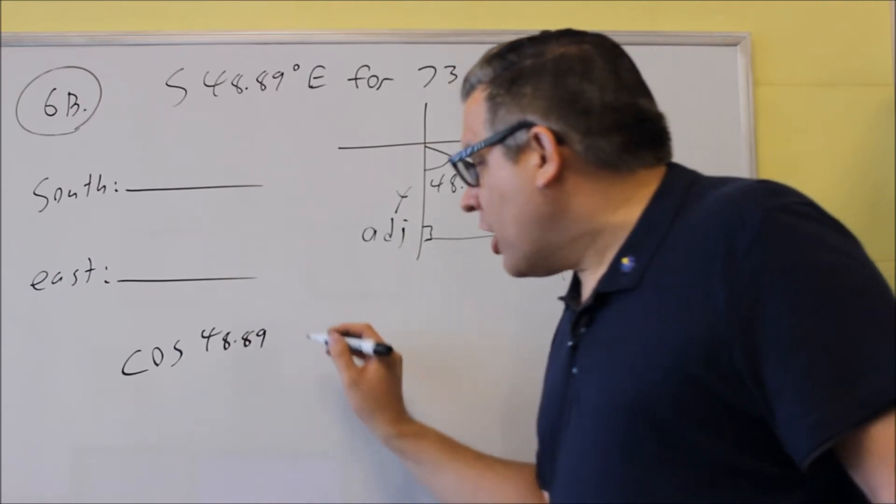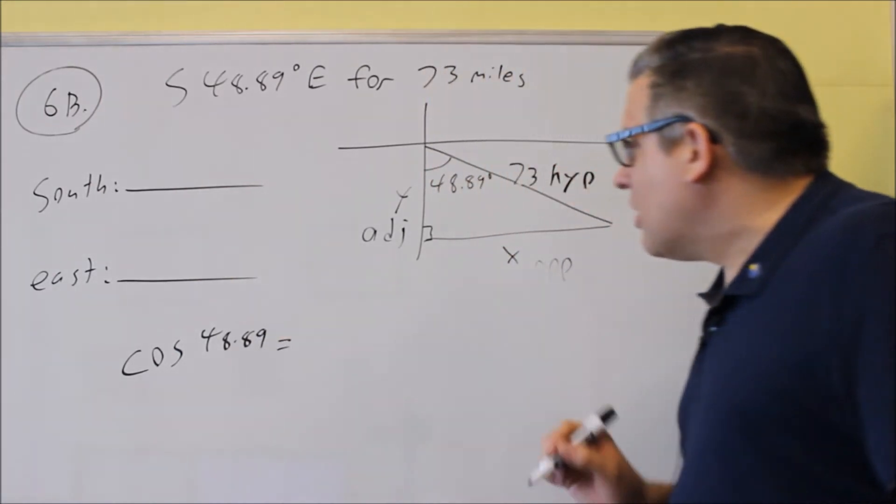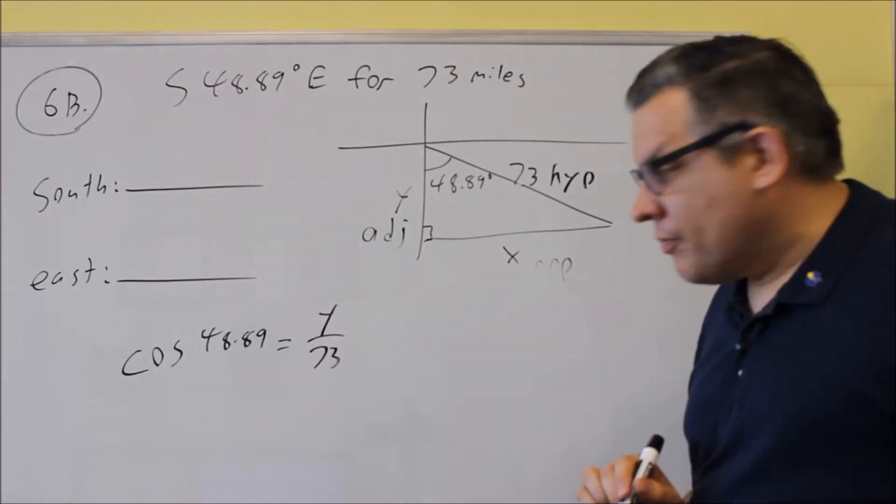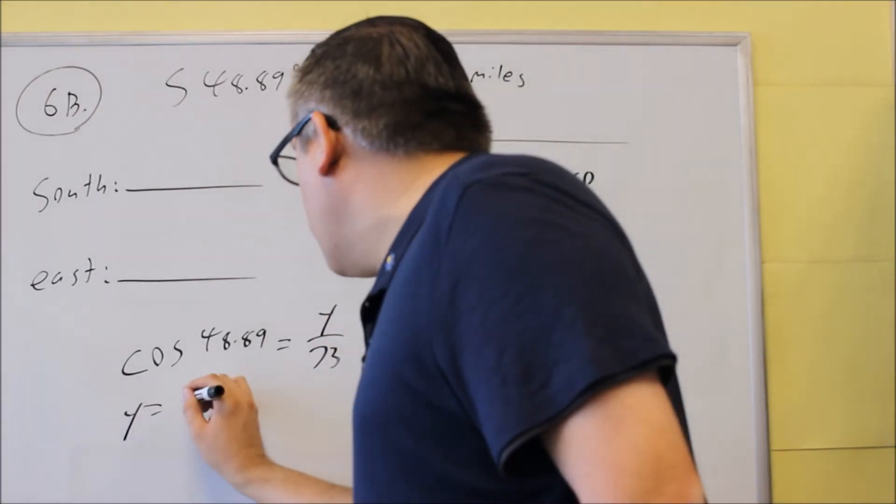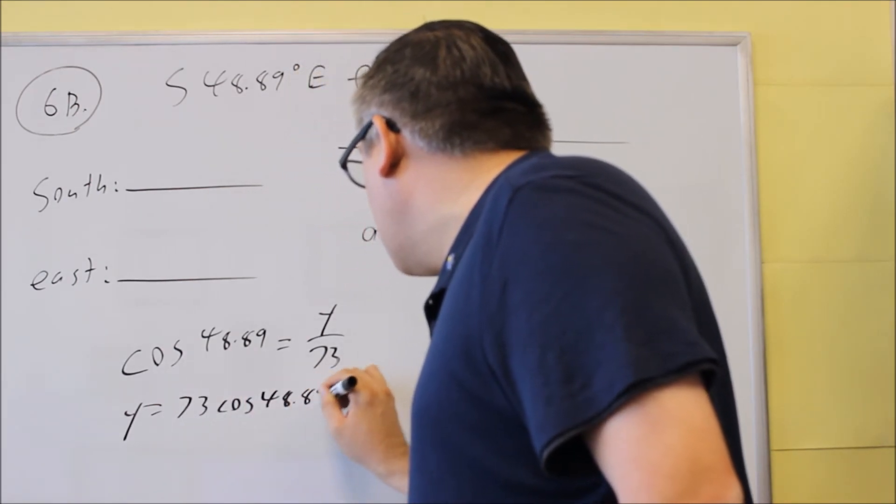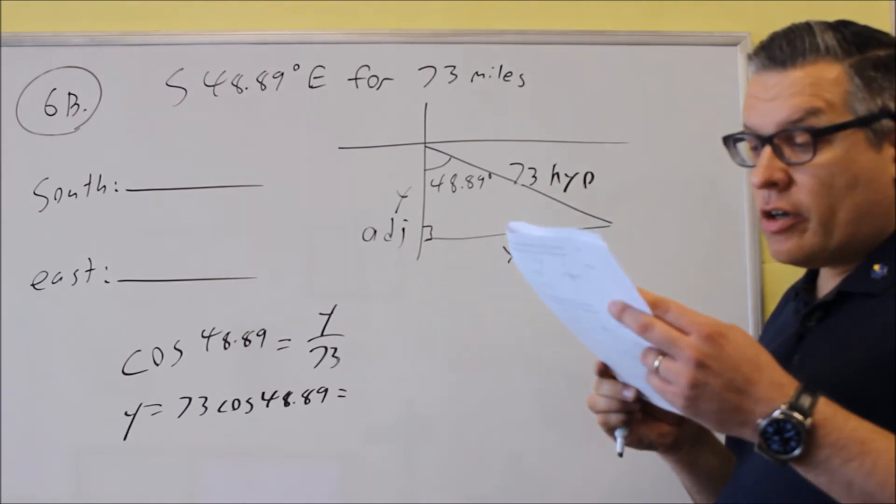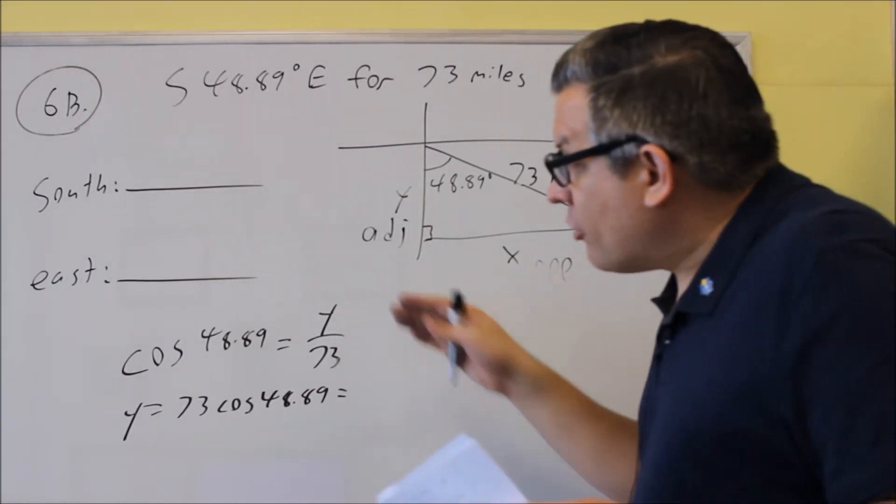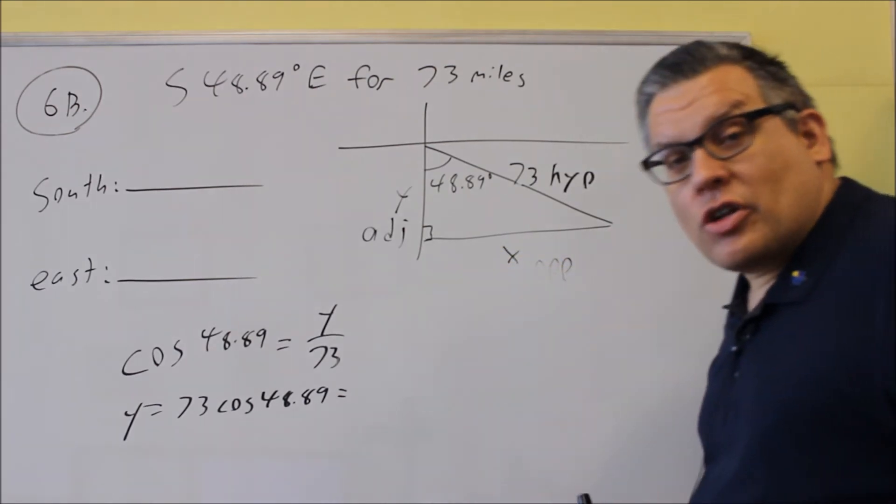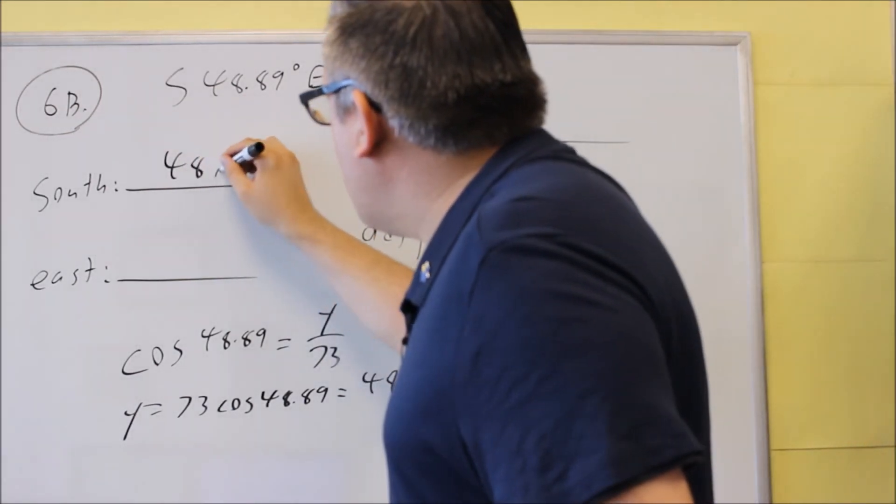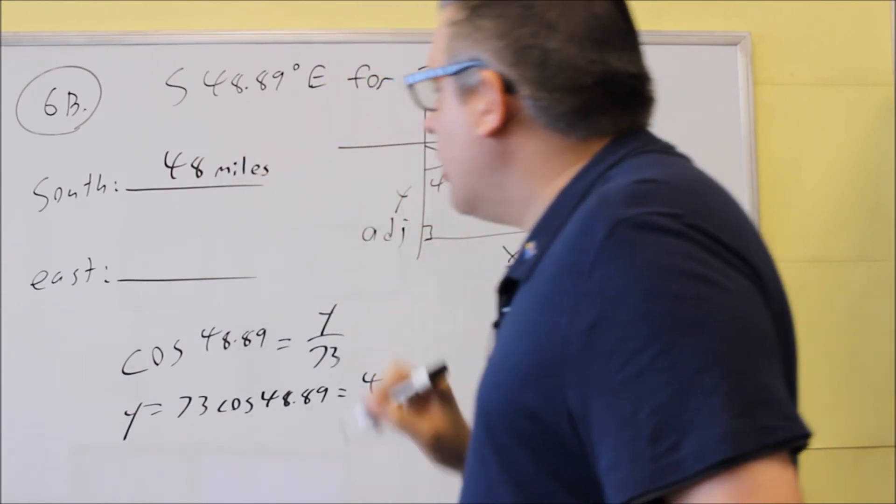So we're going to use 48.89. That's equal to adjacent over hypotenuse. That's y over 73. y is equal to 73 cosine 48.89. And again, it asks to round us to the nearest whole number. So in this case, the amount that we're going to be going south is going to be 48 miles. So we put 48 miles here for the south.